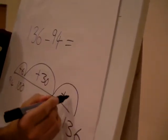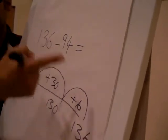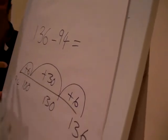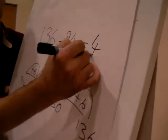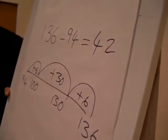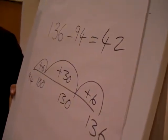And if I add 6, that takes me to 136. Straight away, 6 and 6 is 12, 6 and 6 is 12. Add 30, 42. Does that make sense?